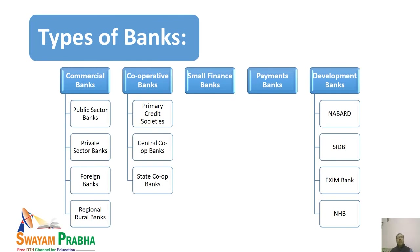Under commercial banks, we have public sector banks, private sector banks, foreign or international banks, and regional rural banks. Under cooperative banks, we have primary credit societies, central cooperative banks, and state cooperative banks. Under development banks, we have NABARD, SIDBI, Exim Bank, and NHB.